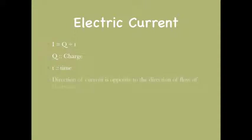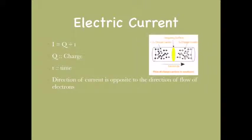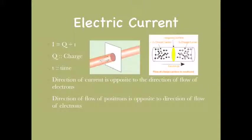Note that the direction of current is opposite to the direction of flow of electrons. The direction of flow of positive charges is also opposite to the direction of flow of electrons, hence the direction of flow of current is the same as the direction of flow of positive charges.